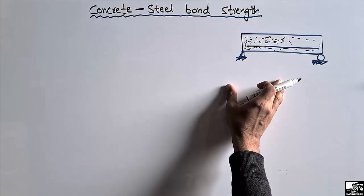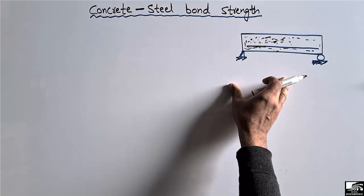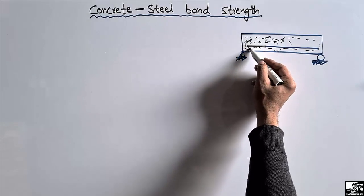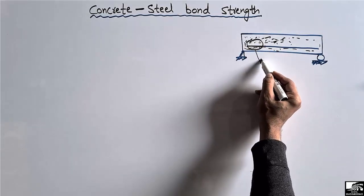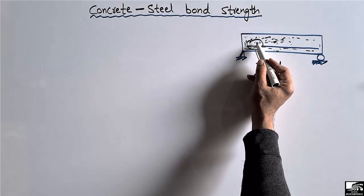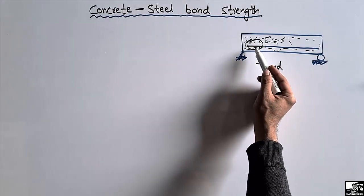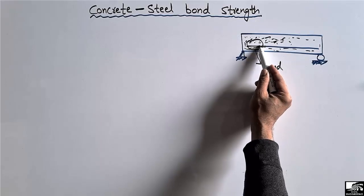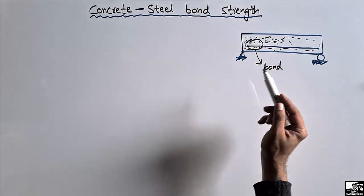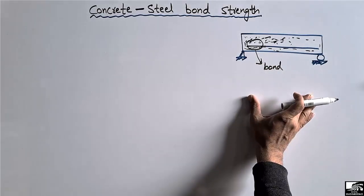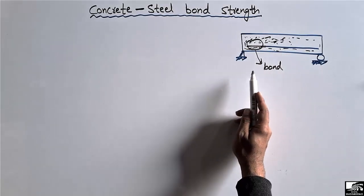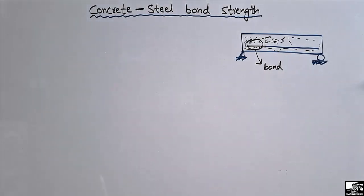There will be some bond between this concrete and the steel, which is known as the bond between the concrete and the reinforcement. There are some factors that affect this bond strength. The stronger the bond between the concrete and steel, the higher the load that can be taken. Now let's go through the various factors that affect this bond strength one by one.